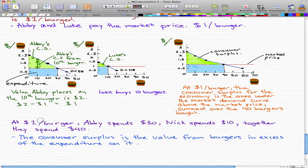So at a dollar per burger, Abby spends $30, Nick spends $10. Together they spend a total of $40. Now, the consumer surplus is the value from the burgers in excess of the expenditure on it.